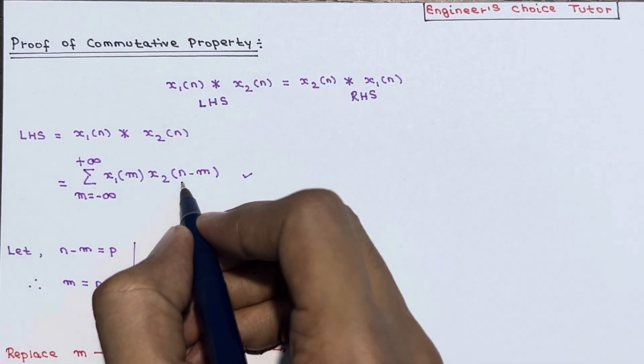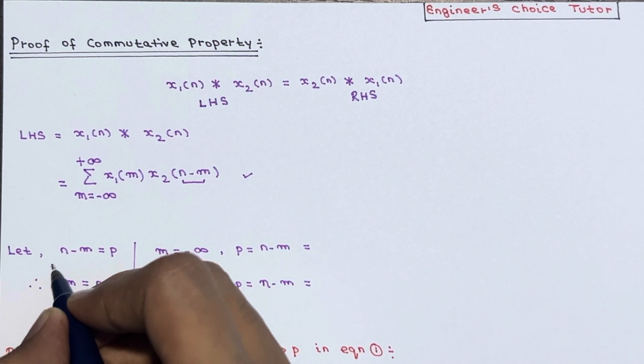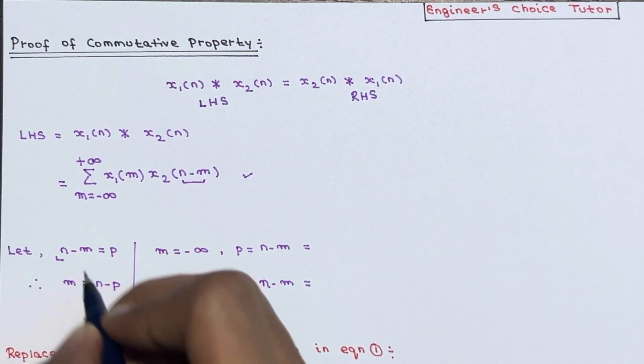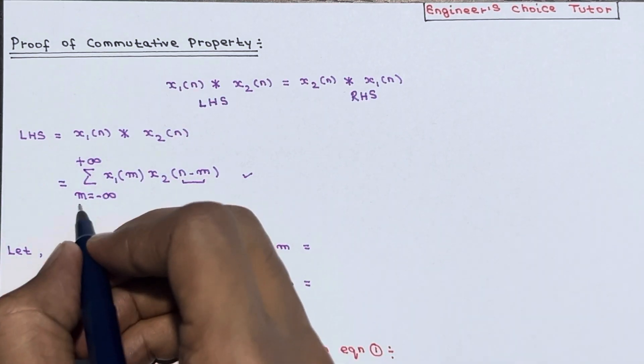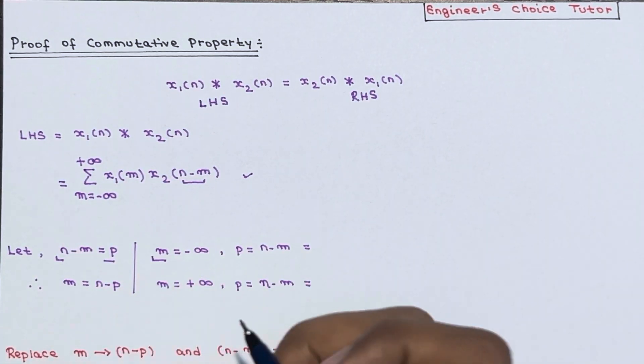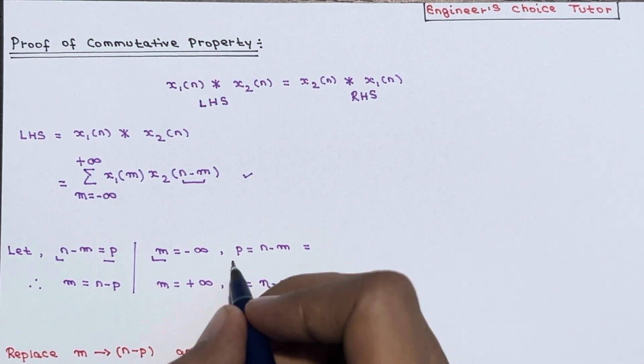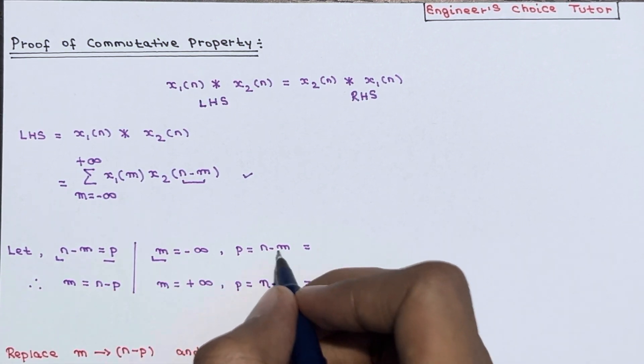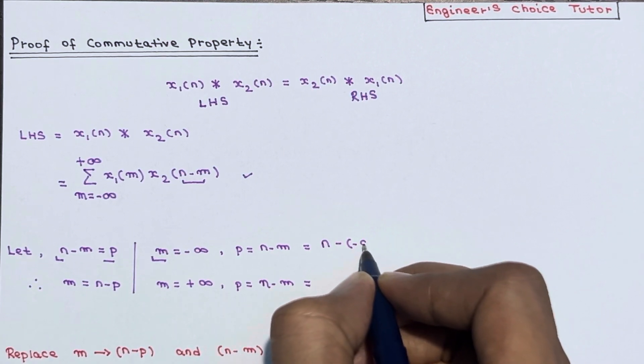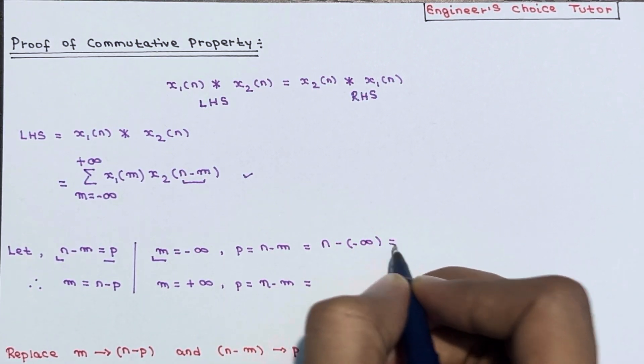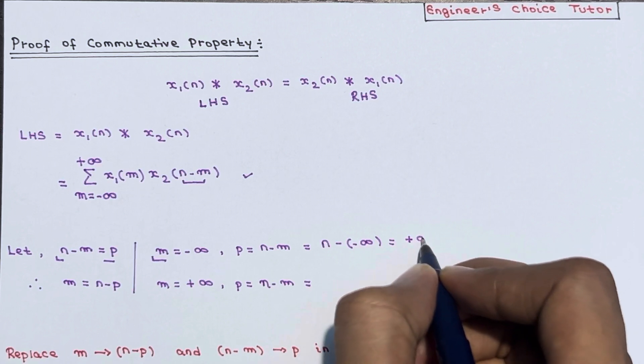Now what we are going to do is let n minus m equal to p. So if you see when m is minus infinity, then what is the value of p? So p equals n minus m, so n minus minus infinity, it becomes plus infinity overall.